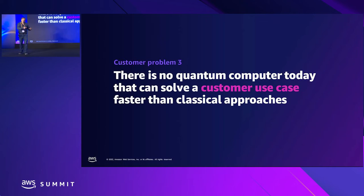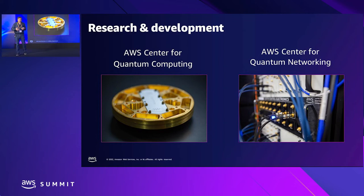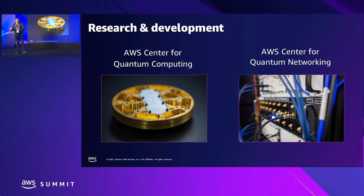That's why we launched two extra initiatives. First, the AWS Center for Quantum Computing, launched in 2019 in partnership with Caltech — the California Institute of Technology. This is where we are researching and building our quantum computers. Our goal is to build a quantum computer that can solve customer problems, one that is fault-tolerant, performs low-error computations, and scales beyond the capability of conventional computing technology.